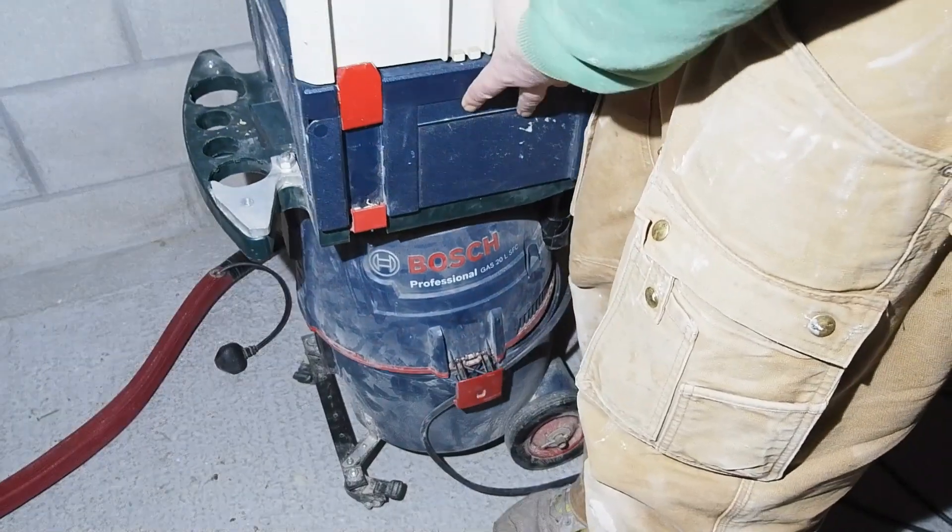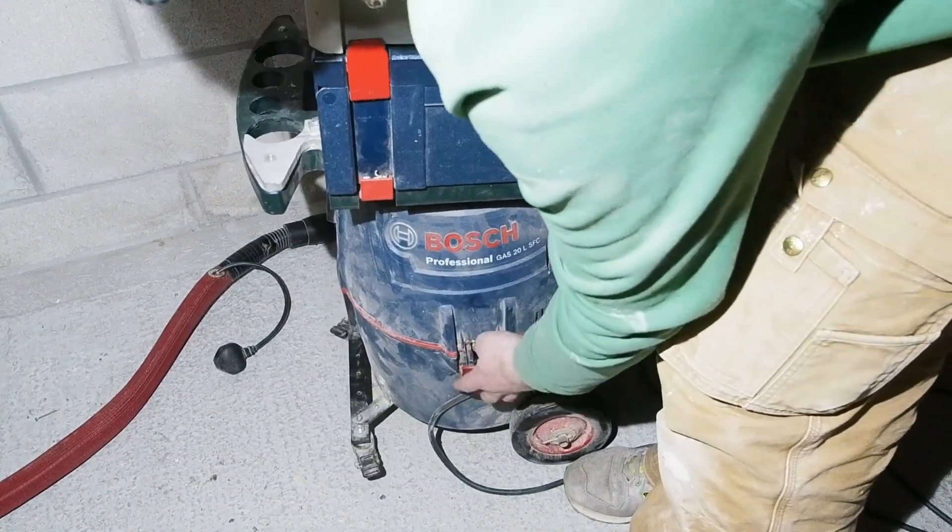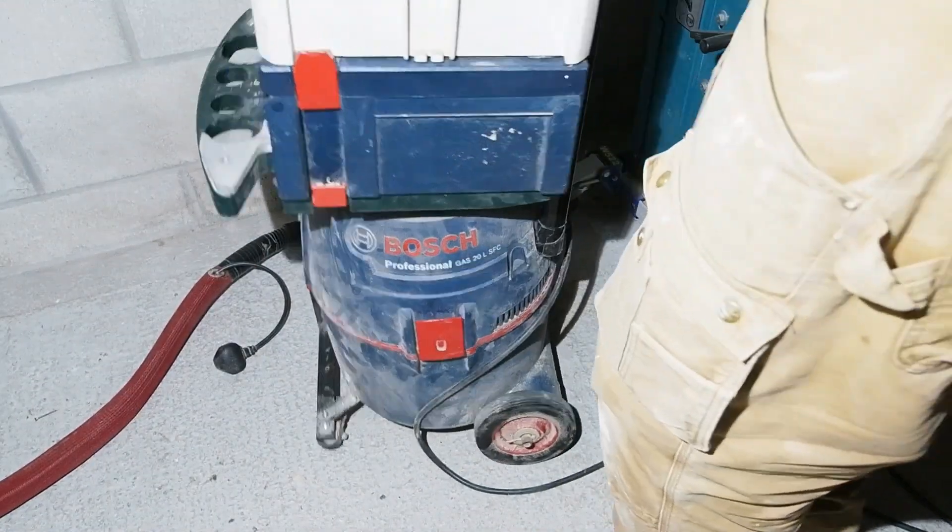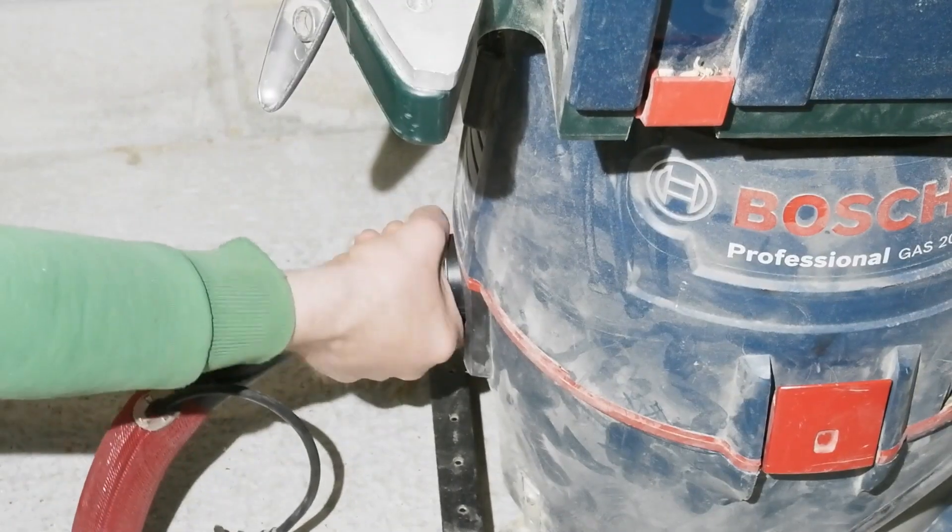Just as a heads up, the vac end of the Centec hose is 58mm I think, and as you can see, would have popped straight into the Bosch vac.